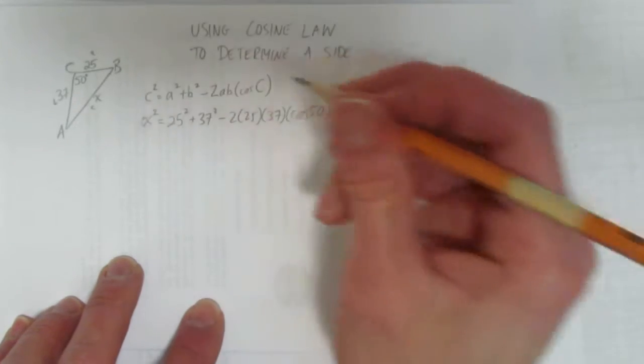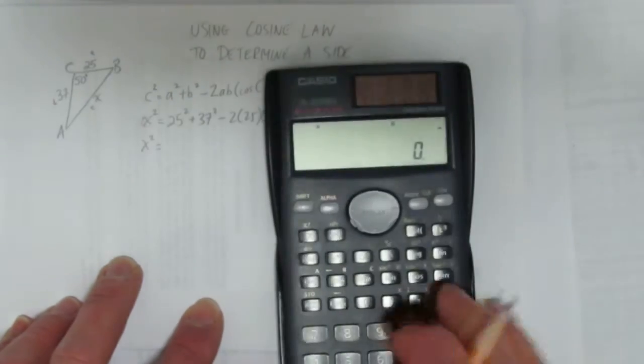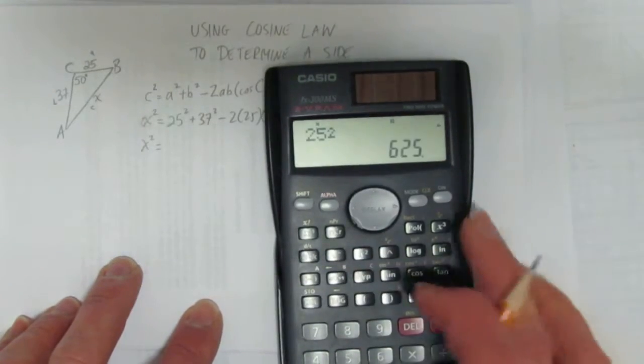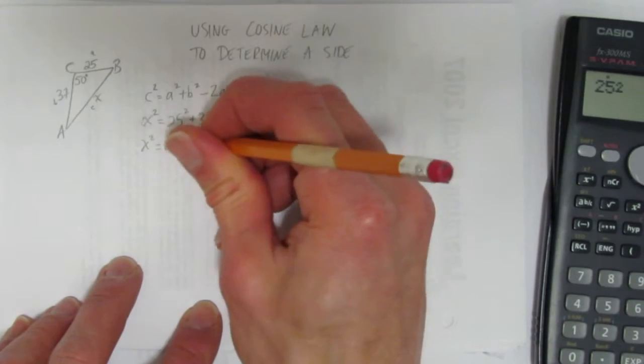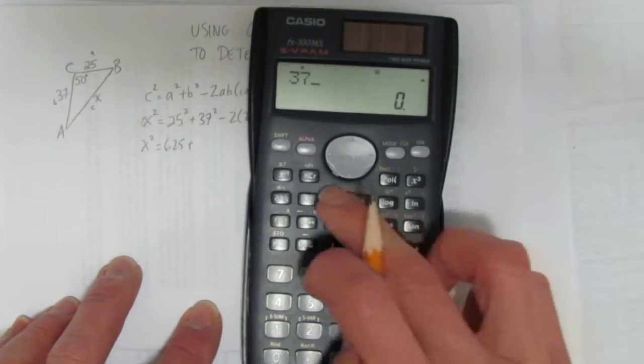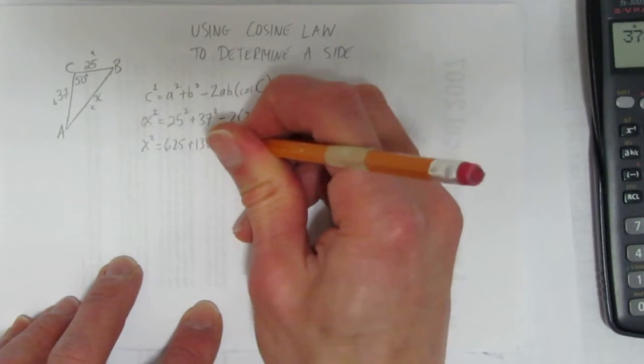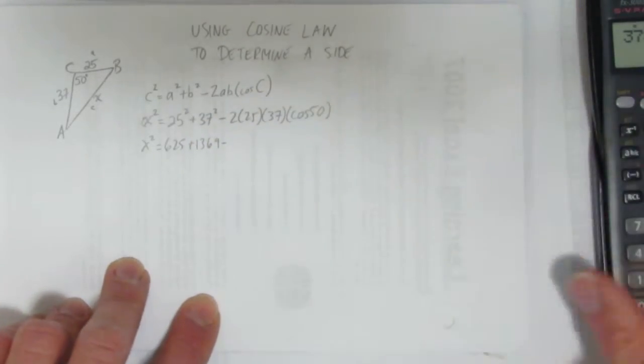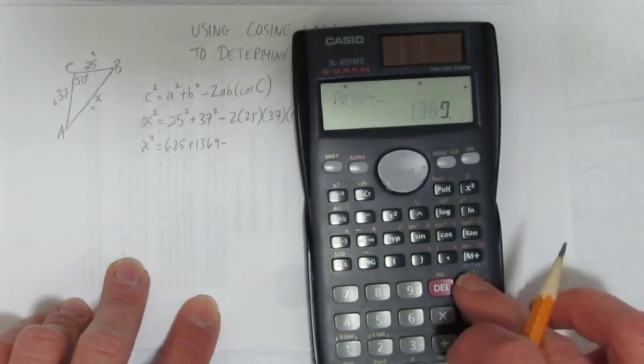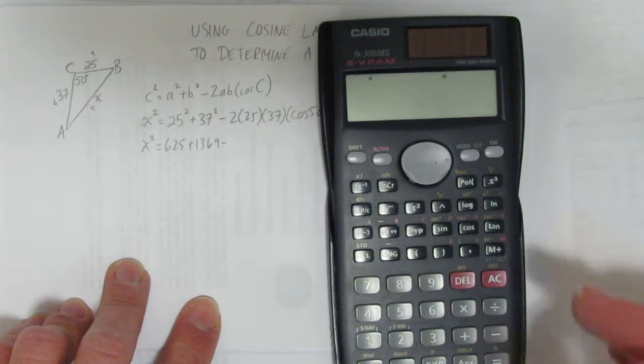Okay, let's do some calculations. 25 squared - what's 25 squared? 625. What's 37 squared? 1369. Minus two times that - a lot to do there. You can type it however you want. I usually do cos 50 first, just to make sure I don't mess that up.